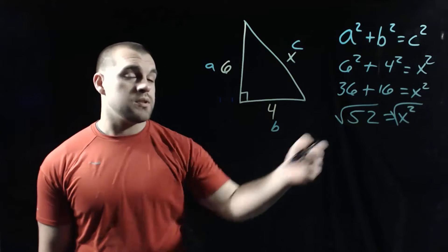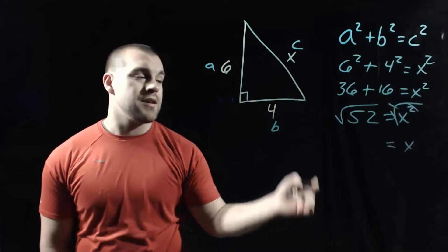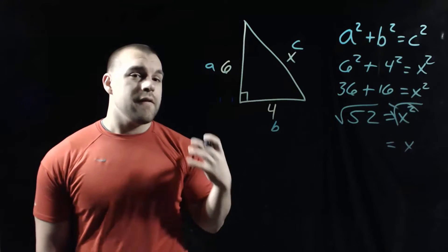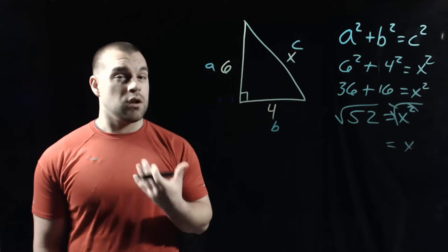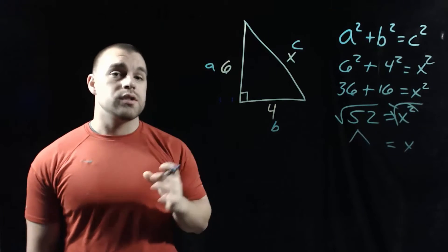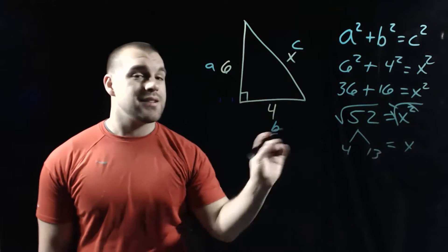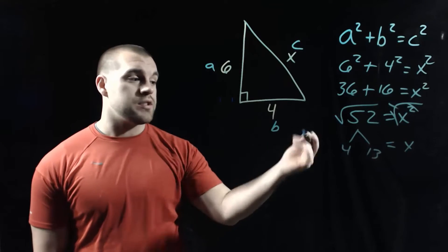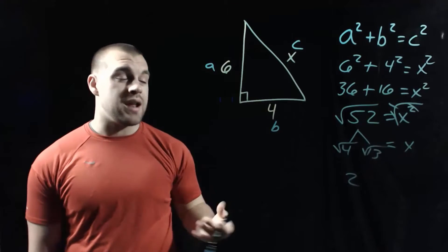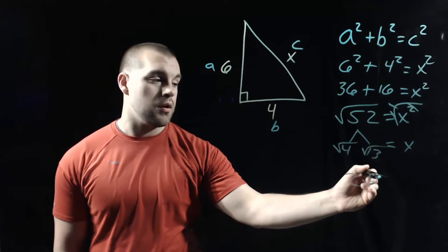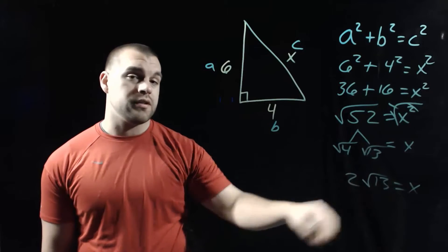On the right side, the square root and the squared cancel each other out, so we've got just plain X. On the left side, 52 is not a nice perfect square number, so we're going to look to break it down. Using multiplication, we can take 4 times 13 to get 52. The square root of 4 is 2, and the square root of 13 can't be broken down, so it stays as the square root of 13. So our missing hypotenuse length is 2 root 13.